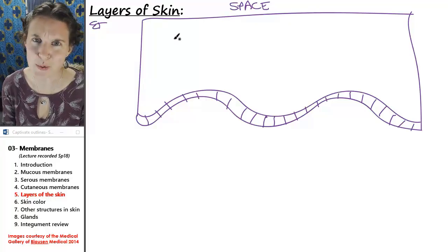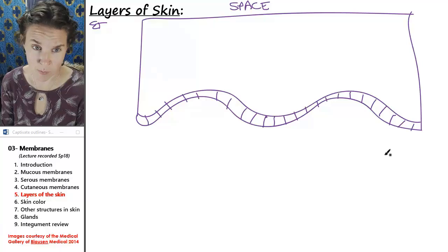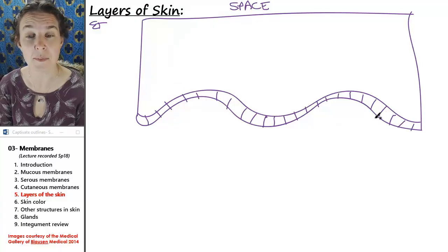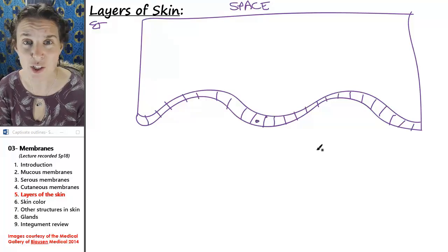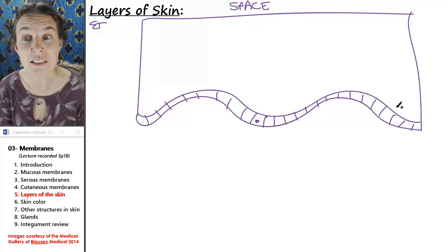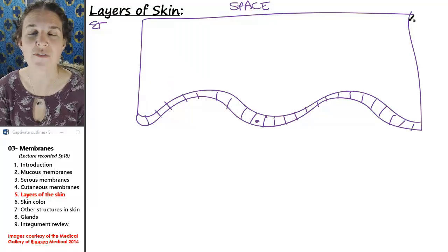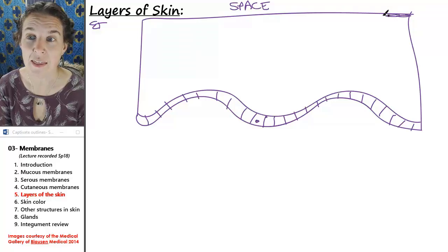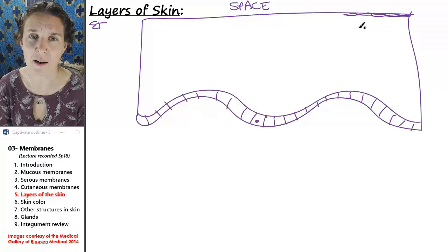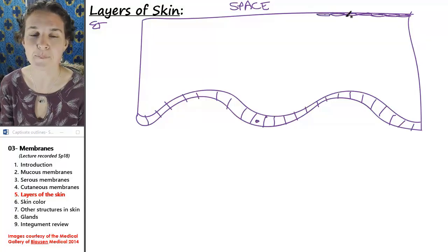I already told you the answer to this. I just drew square cuboidal looking cells. Those are not cuboidal epithelium. That is the basal layer of stratified squamous epithelium. So you know at the top of this thing that I'm going to end up with these super flat dead cells.